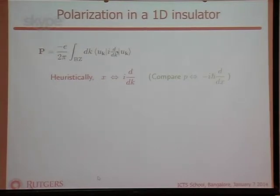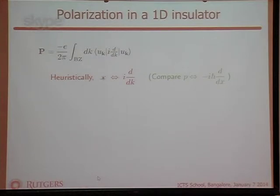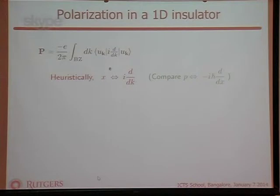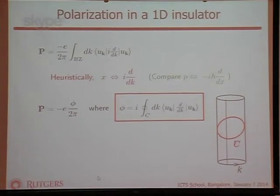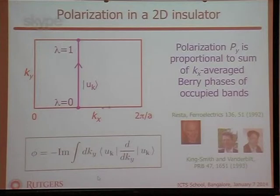I want to take matrix elements of the position operator x, since the dipole moment is just that — but I can't take matrix elements of x between Bloch states because they run to infinity and x diverges. Heuristically I replace x by i∂/∂k, just as in quantum mechanics p = ℏk is replaced by -iℏ∂/∂x. Substituting this in gives exactly the Berry phase integrand, so the polarization for a one-dimensional insulator is given by (e/2π) times the Berry phase calculated around the Brillouin zone from the cell-periodic Bloch functions.